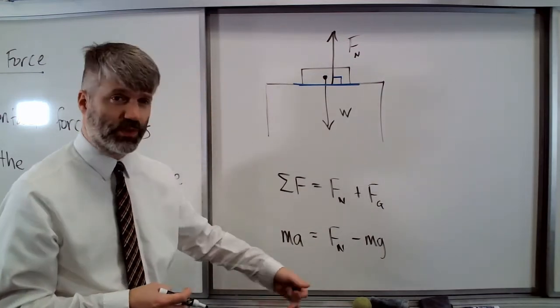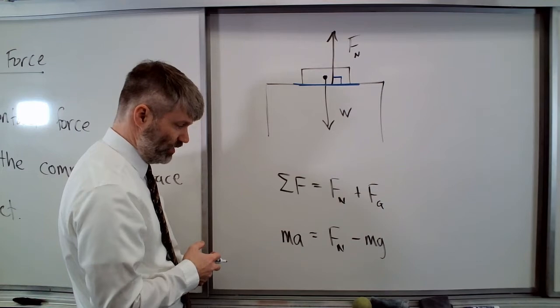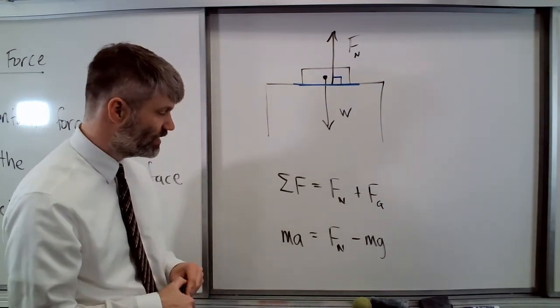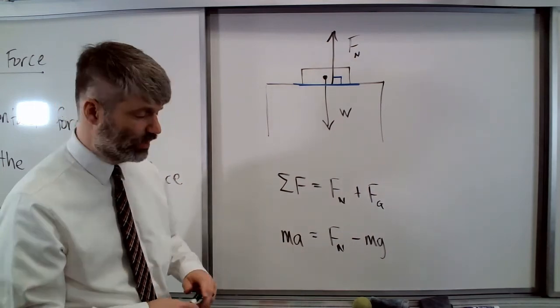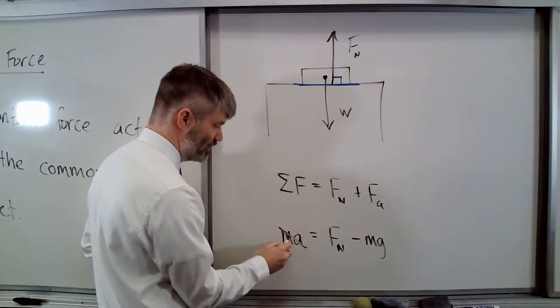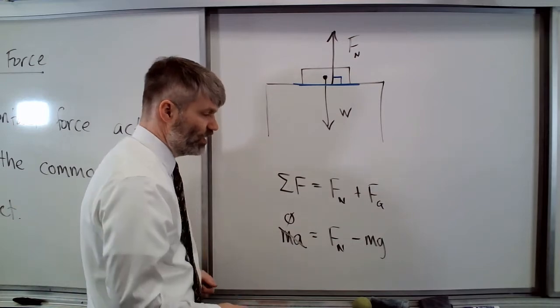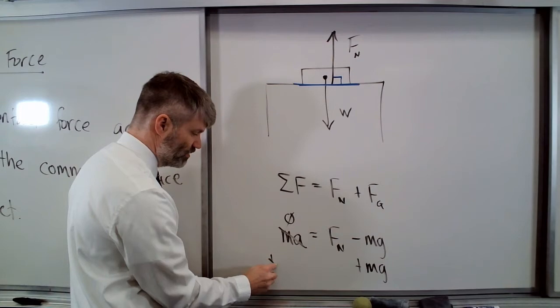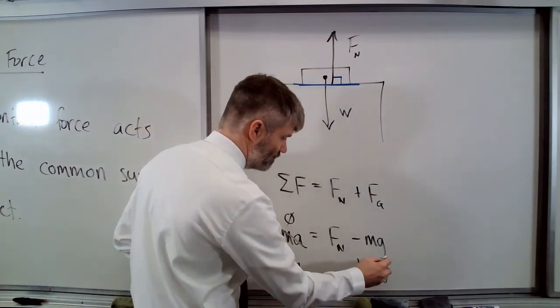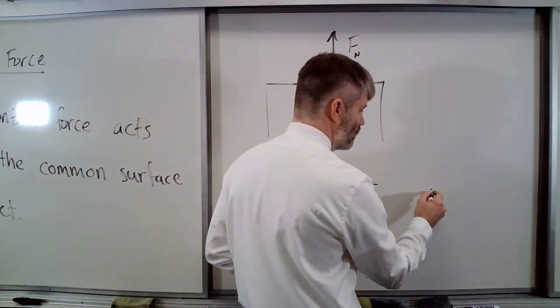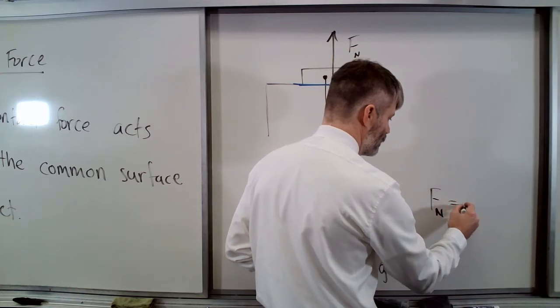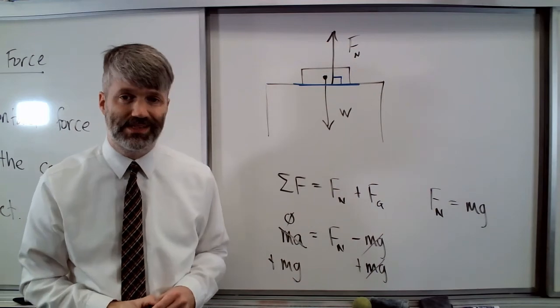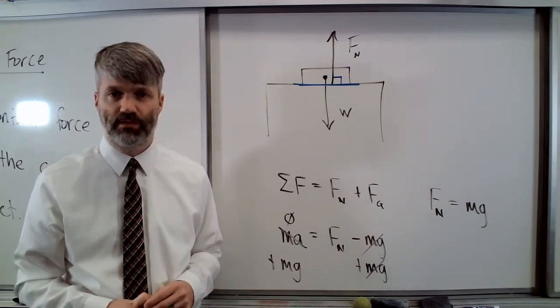The next step, we want to get the normal force on its own. But even before that, we can see something very nice. If the acceleration is zero, then this whole side is zero. We can see what happens by adding the weight to both sides. We can see that the normal force in this case is equal to the weight of the object.